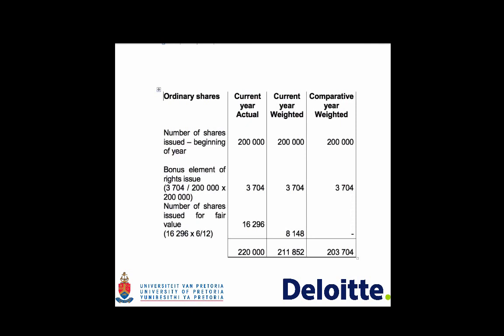The purpose of this video is to explain the effect of a rights issue on earnings per share. As shares have changed during the year, it is suggested that a three-column table is used for the calculation of the weighted average number of shares.